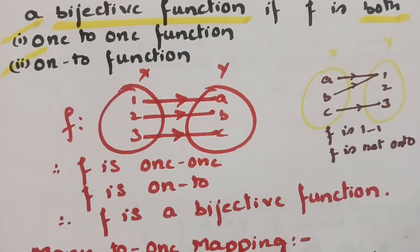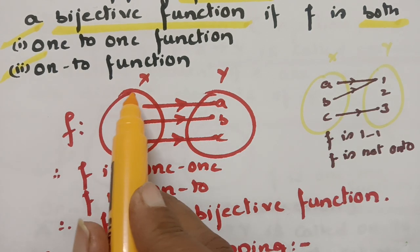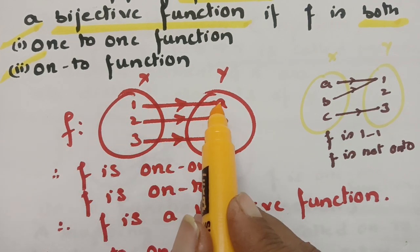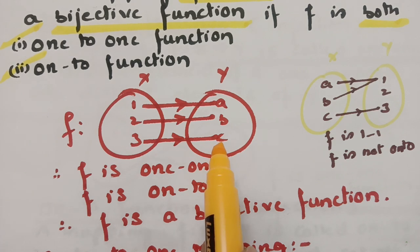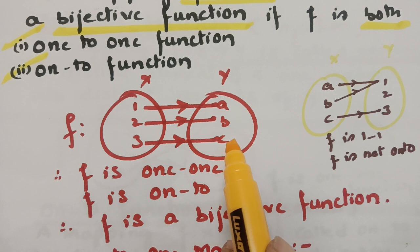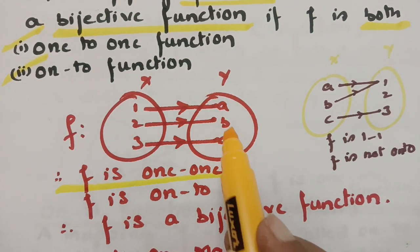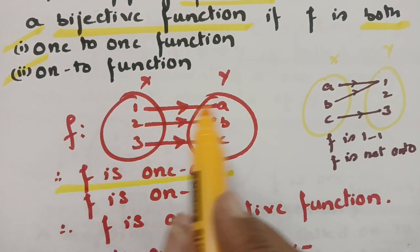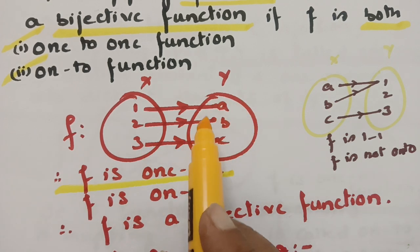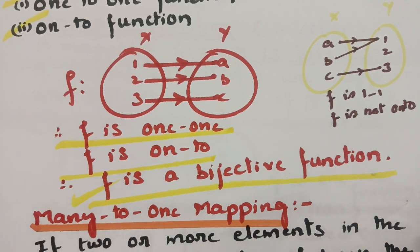For example: given set x and set y, check for one-to-one — 1 maps to a, 2 maps to b, 3 maps to c, so distinct elements of x are mapped to distinct elements of y, confirming it is one-to-one. Checking onto from set y: a has image 1, b has image 2, c has image 3 — every element in set y has an image in set x, confirming it is onto. Therefore f is a bijective function.